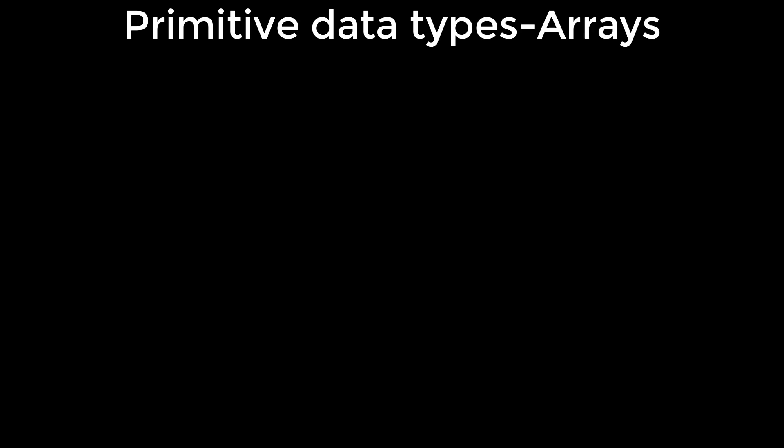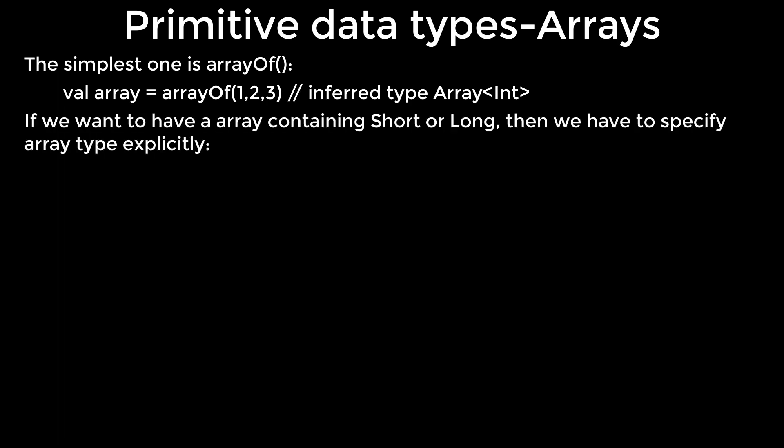Arrays: in Kotlin arrays are represented by the array class. To create an array in Kotlin we can use a number of Kotlin standard library functions. The simplest one is arrayOf. By default this function will create an array of boxed int. If we want to have an array containing short or long, then we have to specify array type explicitly.